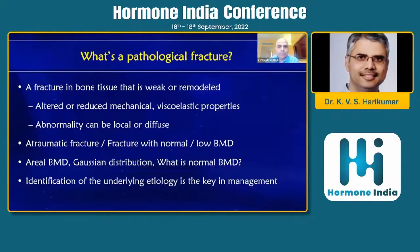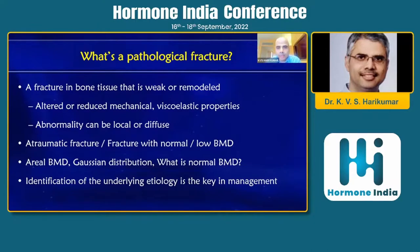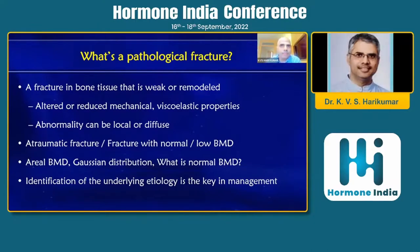If you look at the definition of a pathological fracture, it is a fracture in bone tissue that is actually weak or remodeled. Basically it is not a properly formed bone, so that is the most important thing to understand. It has obviously altered mechanical and viscoelastic properties which makes it more prone to fractures, and the bone disease may be local or diffuse. You may have a cyst or tumor in the bone as a local problem, or a diffuse metabolic bone disease which increases susceptibility across all bones.